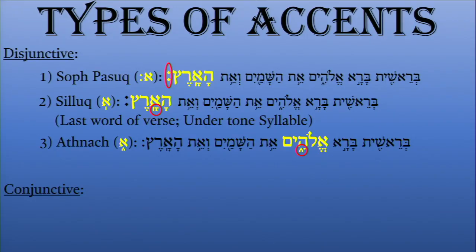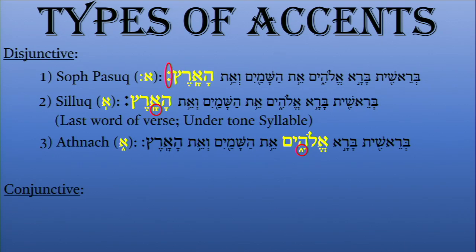We also see that there is an angle or house-looking accent in this verse. This is the Atnach, and it tells us where there is a logical division of the verse in two. It's the logical division in the sense that it tells us where the two ideas pause — not the exact midpoint by word count, but where the first theme takes a small pause and then continues with the next theme or idea.